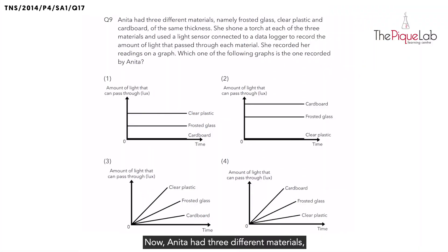Anita had three different materials: frosted glass, clear plastic, and cardboard of the same thickness. She shines a torch at the three materials and uses a light sensor connected to a data logger to record the amount of light that passed through. She then recorded her readings on a graph, and we are required to find out which one of the following graphs is the one recorded by Anita.